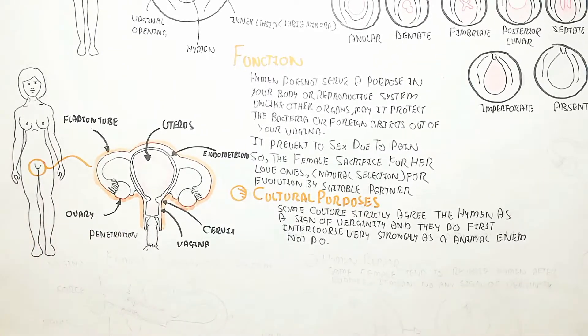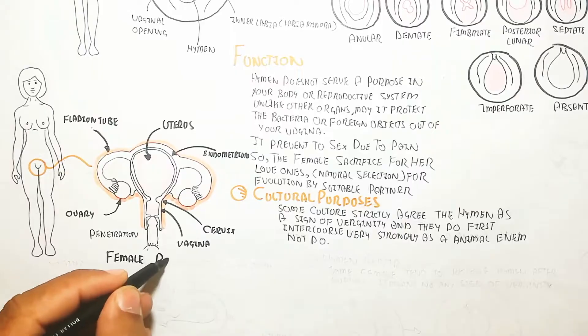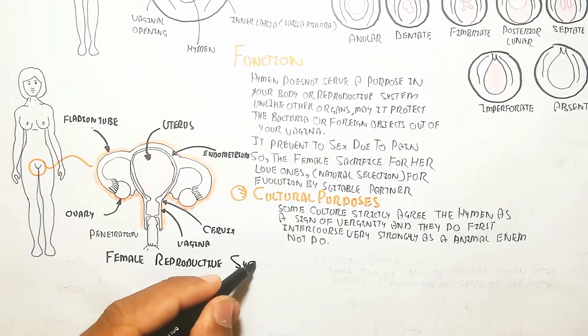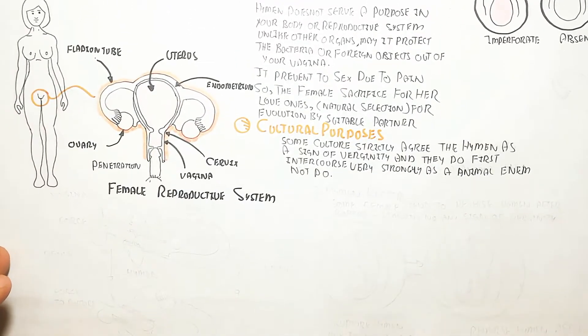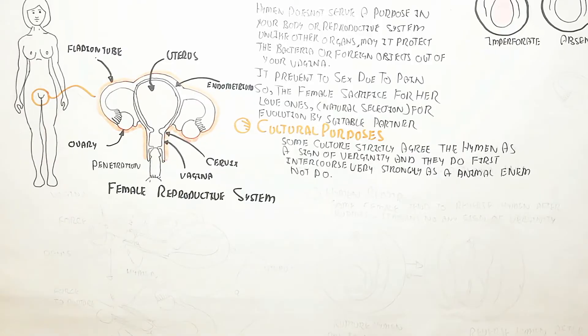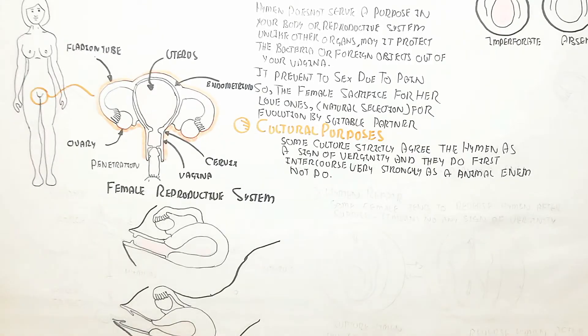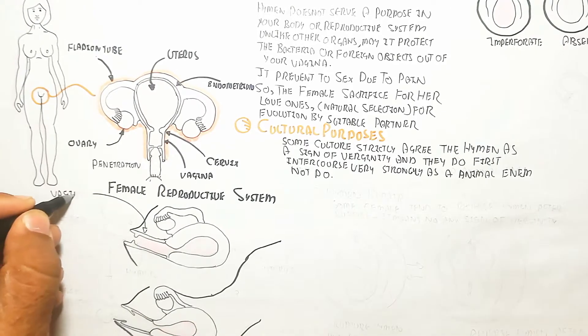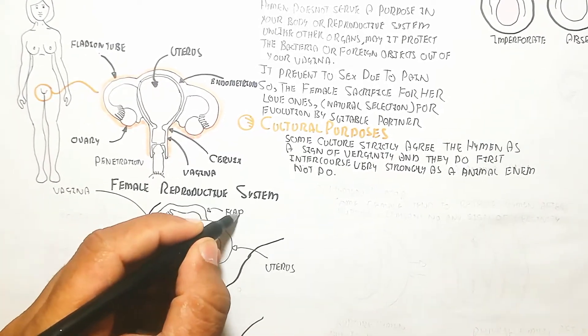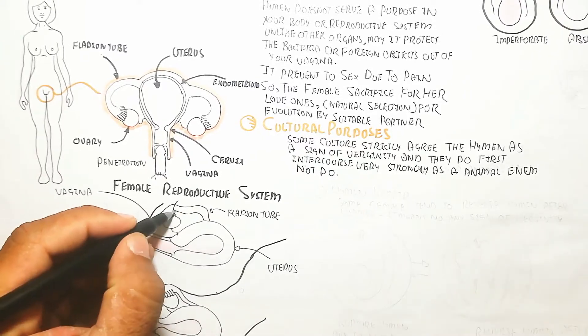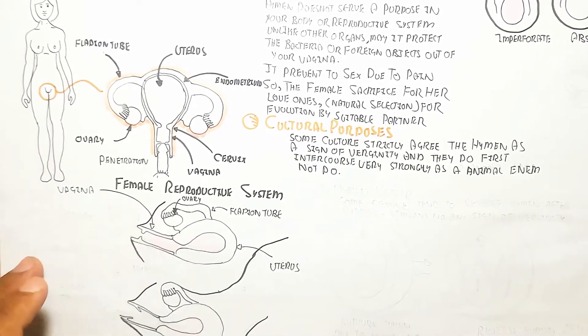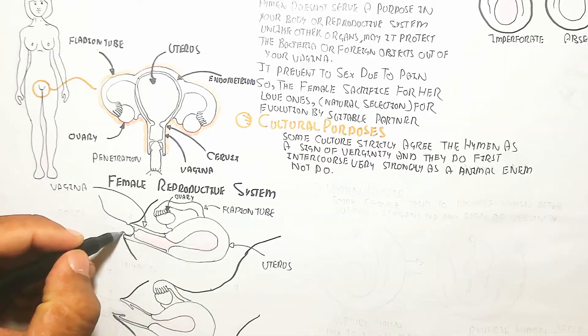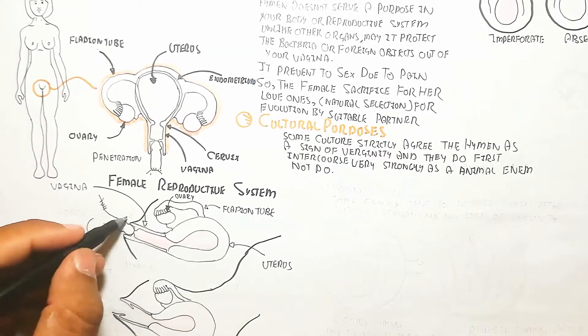This shows in the diagram the penetration of the penis. Here is the hymen. The hymen will basically tear sideways. The insertion of the penis requires force. This force will tear or rupture the hymen. Here is the ovary, fallopian tube, and uterus.